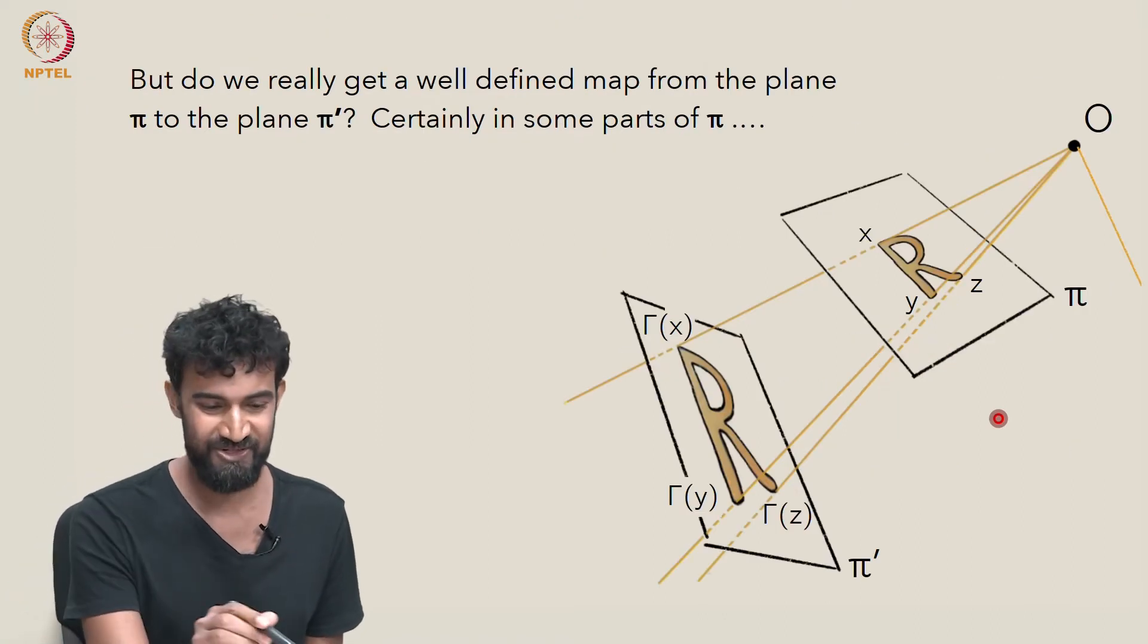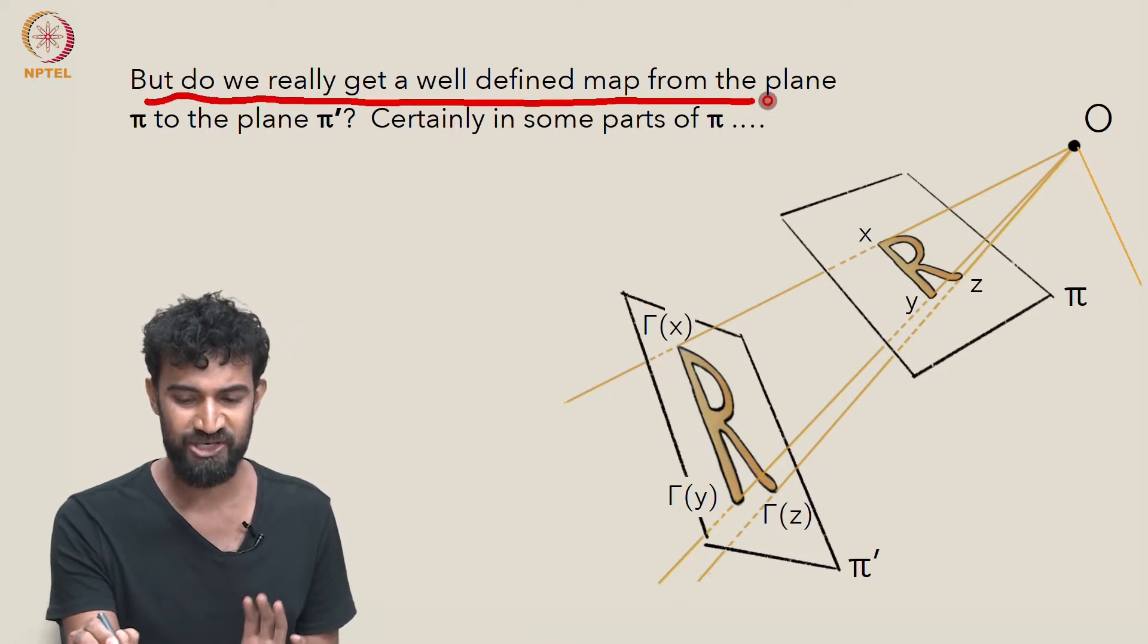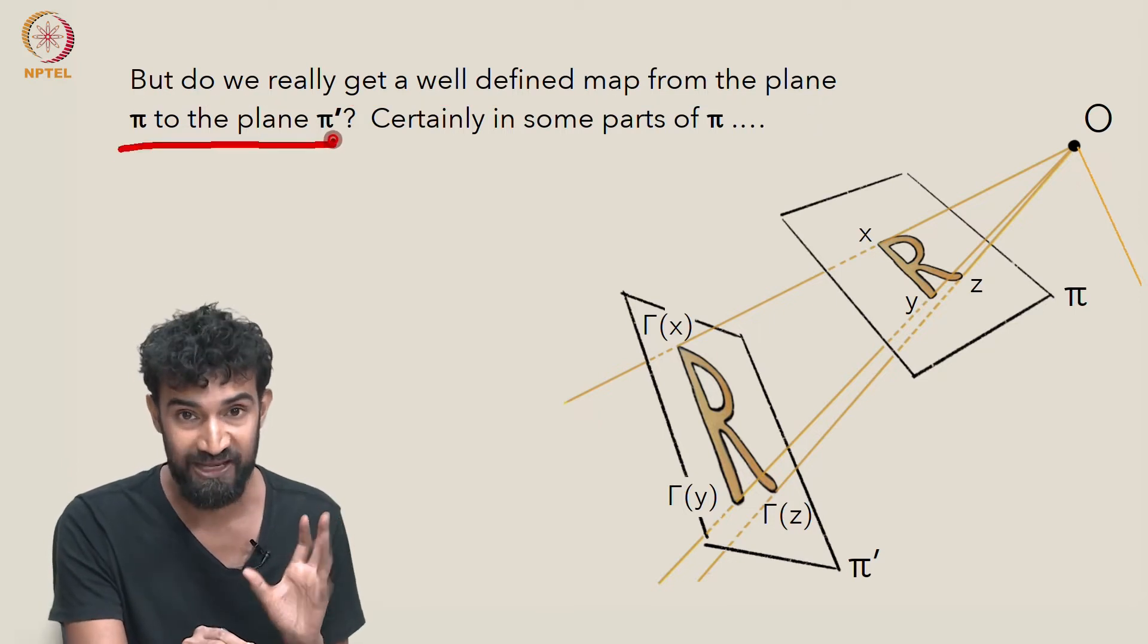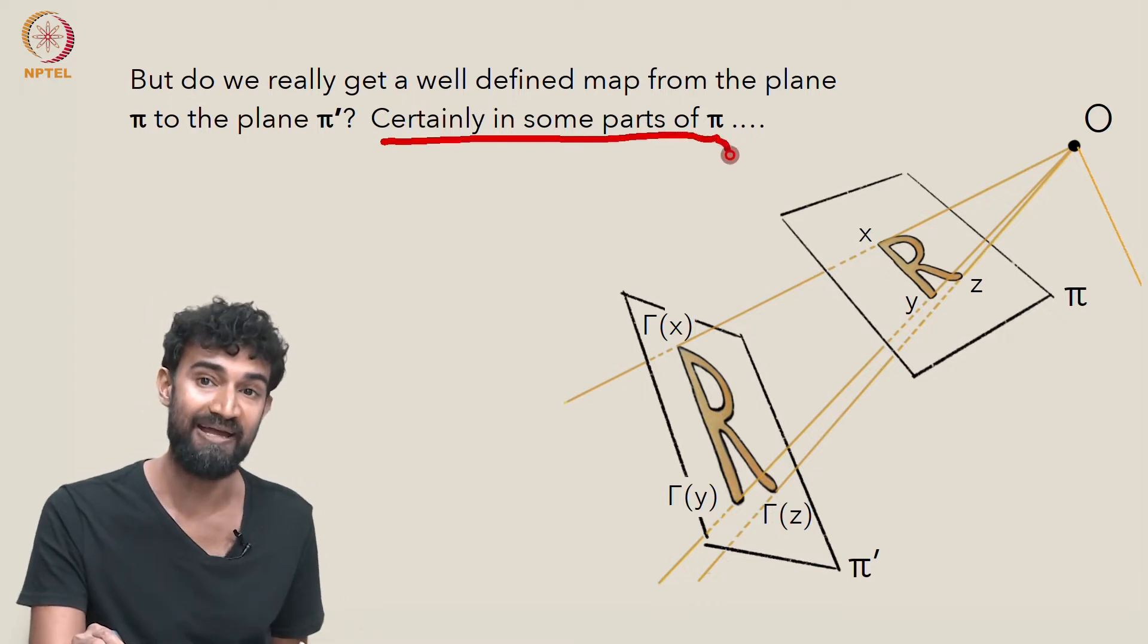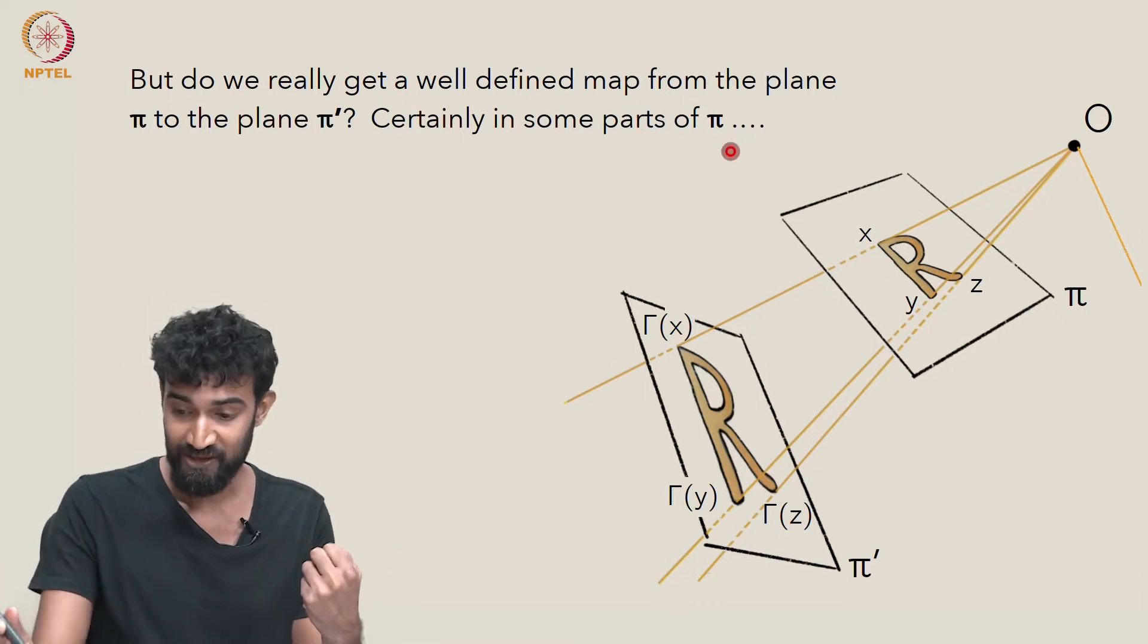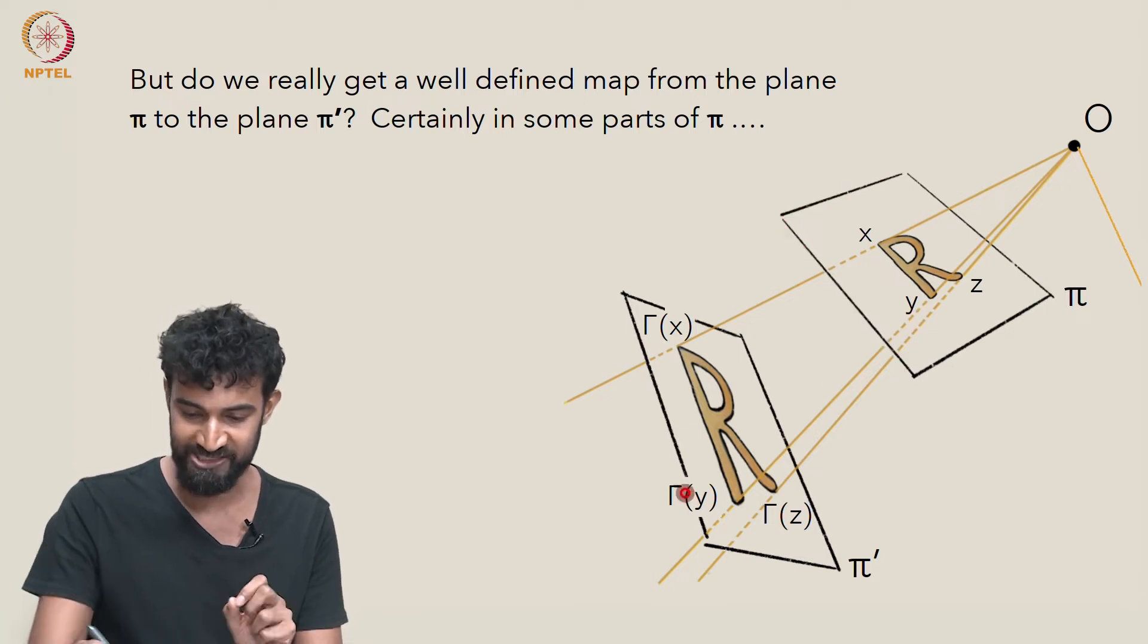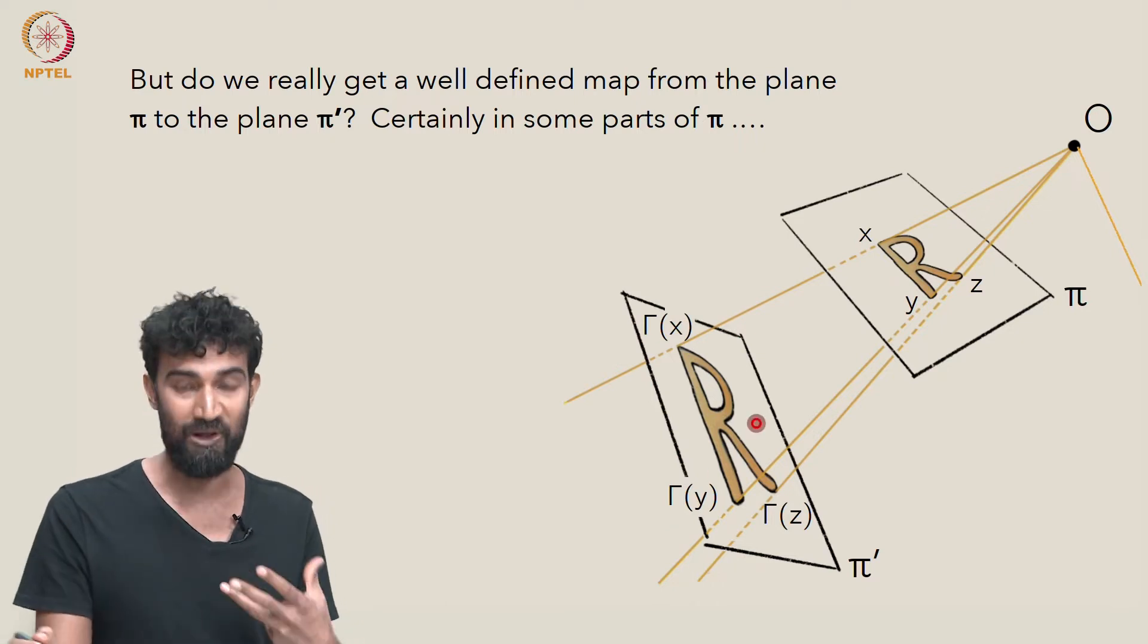But there's a natural question we should raise here, which is whether we actually get a well-defined map from the plane π to the plane π'. We certainly do in some parts of π. That's what we're seeing in these images here. This portion of π seems to very naturally project to this portion of π', and it looks like this map is well-defined.